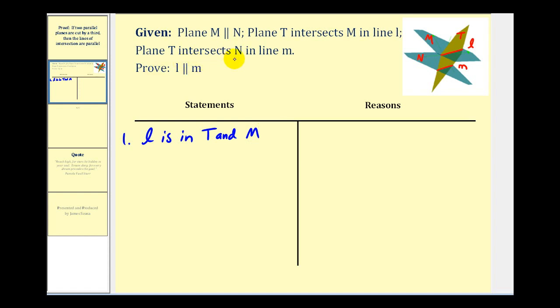And if plane T intersects N in line M, we can say that line M is in T and N. And of course, we also know that M is parallel to N. All this information is given.